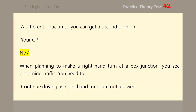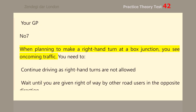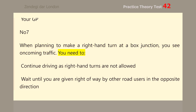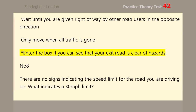Number 7. When planning to make a right-hand turn at a box junction, you see oncoming traffic. You need to enter the box if you can see that your exit road is clear of hazards.